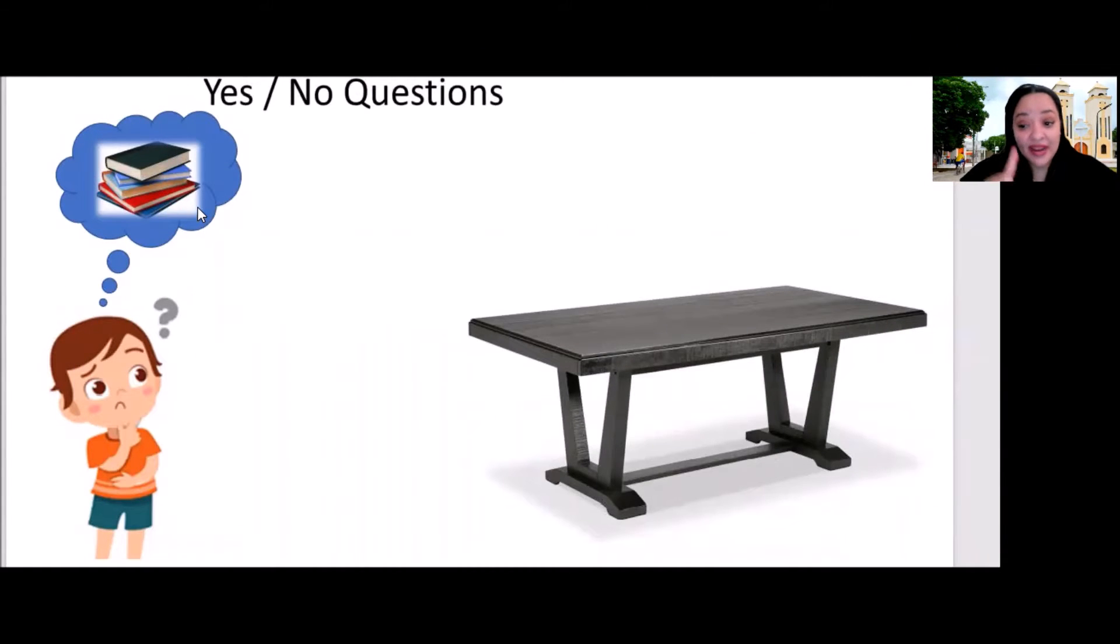So now he's not thinking about one book. He's thinking about one, two, three, four, many books, a bunch of books. And then the question is, are the books on the table? Guys, are the books on the table? No! No, of course. So, no, they're not. That's right.